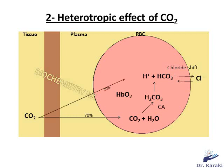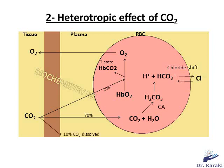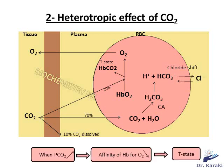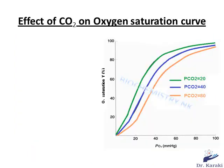The remaining 10% of CO2 is dissolved in plasma. So we conclude that when the partial pressure of carbon dioxide increases, the affinity of hemoglobin for oxygen decreases and the T state of hemoglobin is stabilized. In the following graph, we have three curves with three different partial pressures of carbon dioxide. The green curve has the lowest PCO2 equal to 20, and the orange curve has the highest PCO2 equal to 80 mmHg.